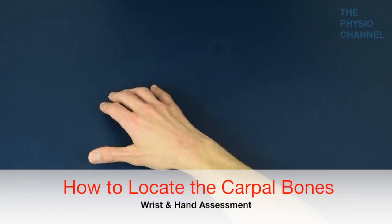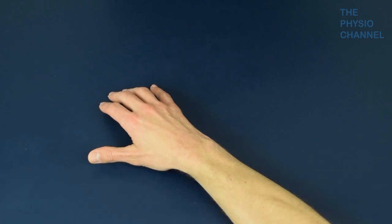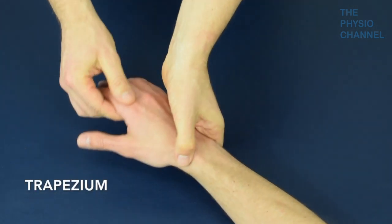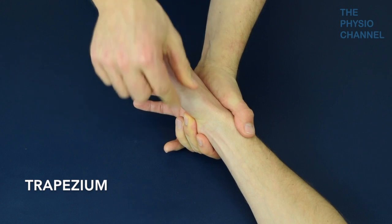This video shows you how to locate the carpal bones. Let's start with the trapezium which is located at the base of the first metacarpal.